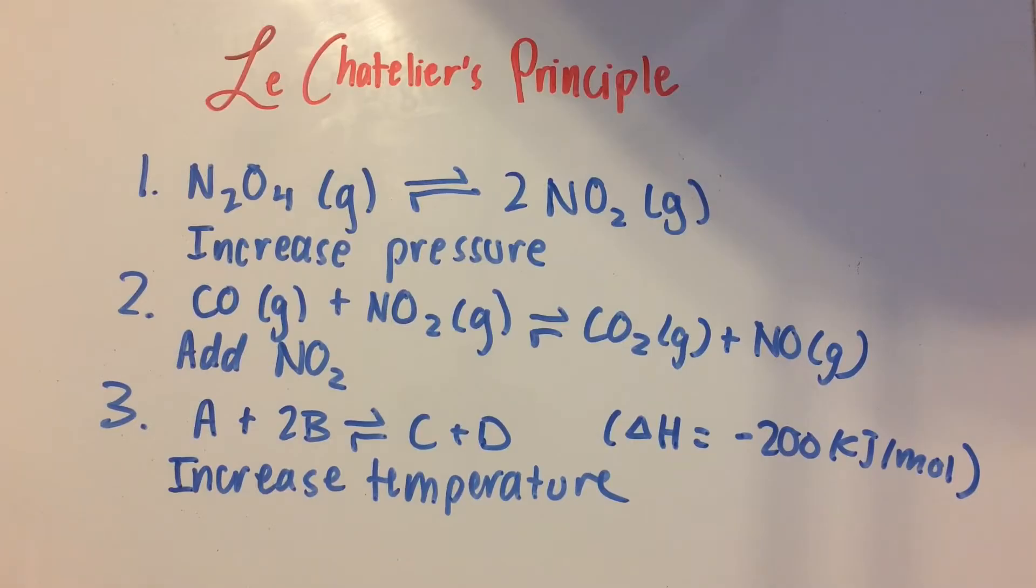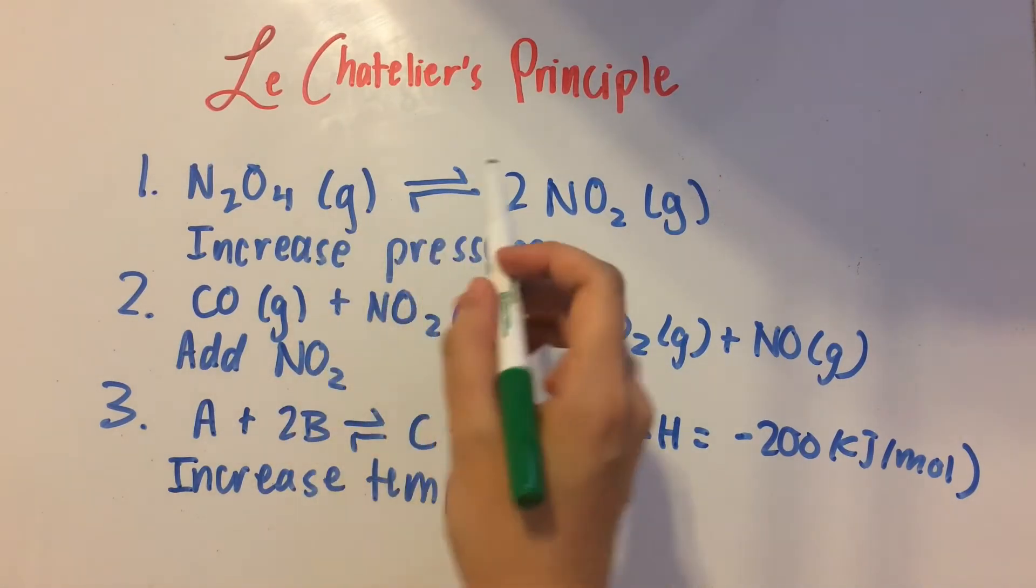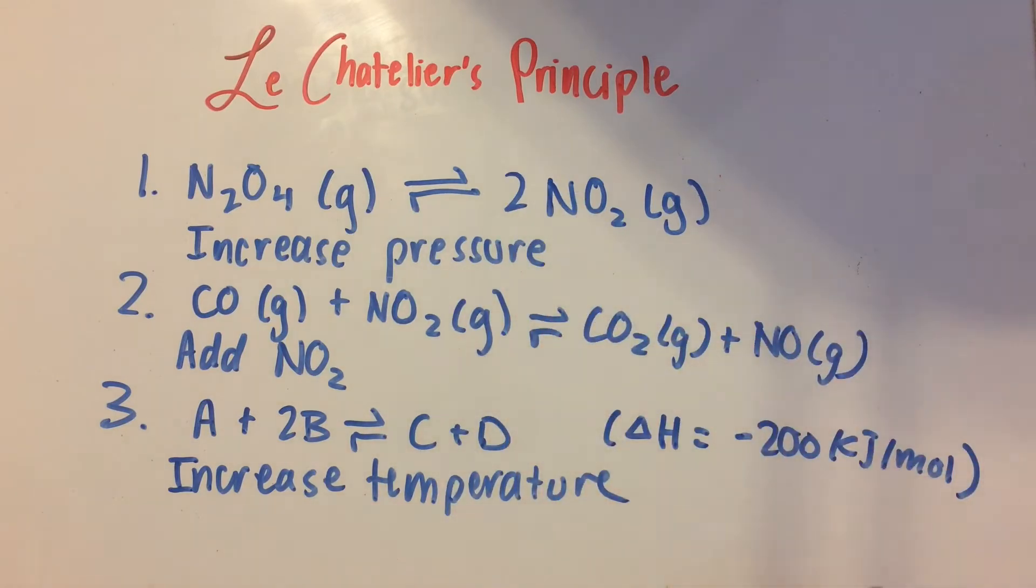Alright, so we're given a set of reactions, and what we have to do is say what happens when a disturbance is applied to the reaction. So first of all, we have N2O4 gas in dynamic equilibrium with 2 moles of NO2 gas.